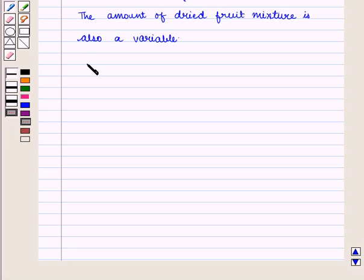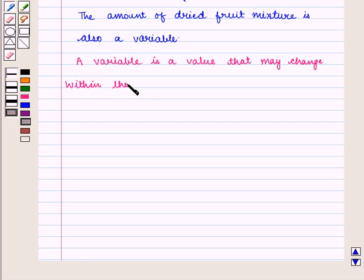So we can say a variable is a value that may change within the scope of a given problem. A variable can be used to represent a quantity that can change often in a relationship to another changing quantity.